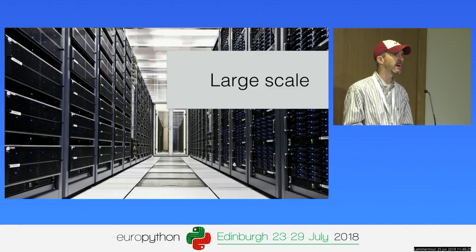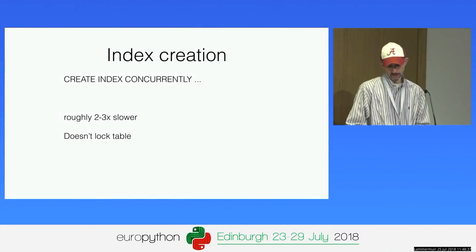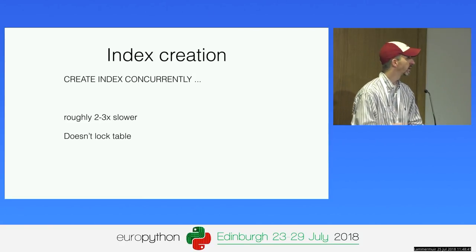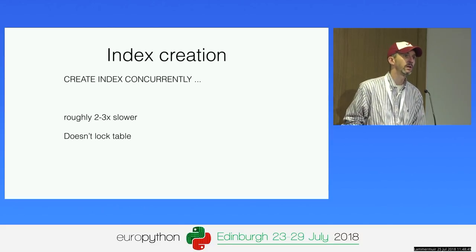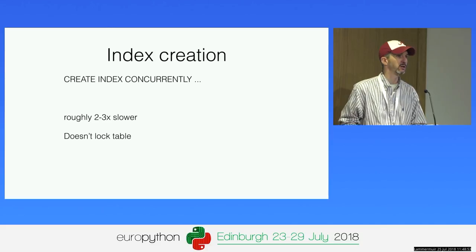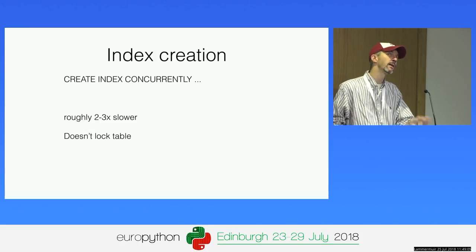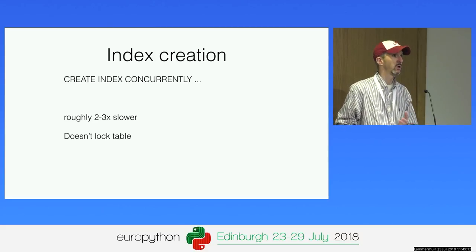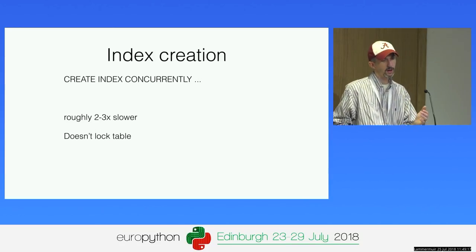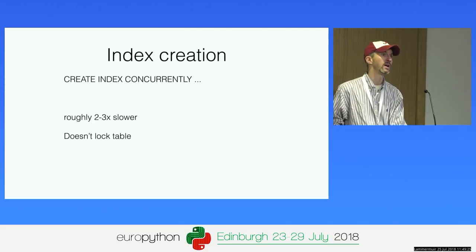At larger scale — and I would classify medium scale as 10 to 100 gigabytes — the larger you get, the more careful you want to be. The first thing: before where you said CREATE INDEX, now you're going to say CREATE INDEX CONCURRENTLY. This cannot be run inside a transaction, so inside your Django transactions you'll have to break this out — sorry, it's worth it. CREATE INDEX CONCURRENTLY does not hold a write lock while the index is being created. It builds the index in the background, waits until it's almost done, then takes the lock and cuts over. It's roughly two to three times slower but doesn't lock writes — really, really key for larger databases.